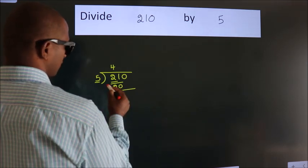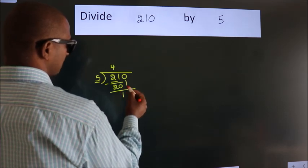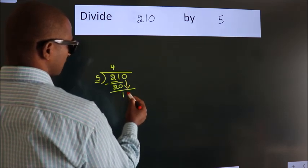Now we should subtract. We get 1. After this, bring down the next number. So 0 down.